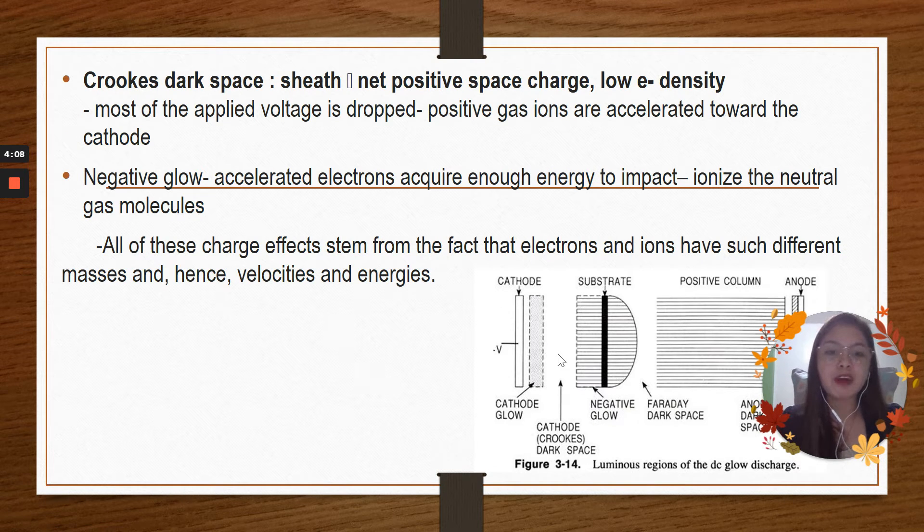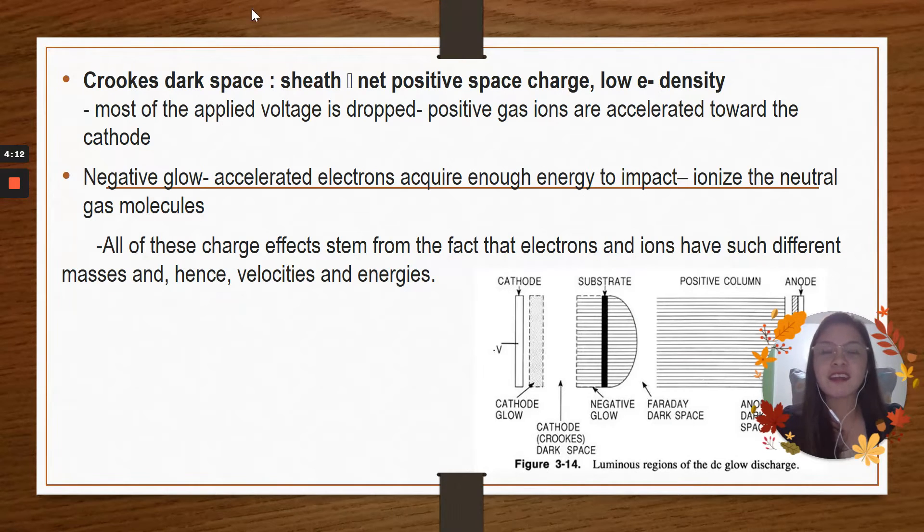Cathode glow is maintained by electrons produced at the cathode by positive ion bombardment. And for the next part, we have the cathode Crookes dark space. This is sheath net positive space charge, low E-density, and most of the applied voltage is dropped in here. Positive gas ions are accelerated toward the cathode.